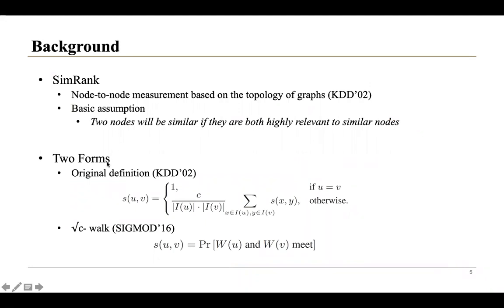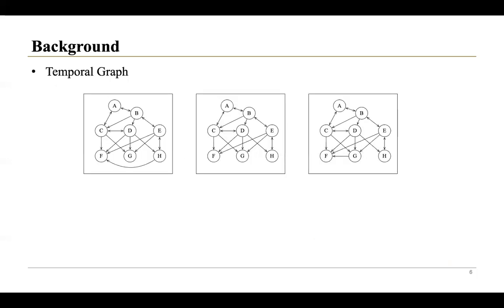SimRank also has some forms to compute the scores. Here we list two relevant forms. The first one is the origin definition, and the second one is the square root C-walk. It interprets SimRank between U and V as the probability that two walks W and W meet, where W is the square root C-walk starting from U. Existing research mainly focuses on SimRank computation over static and dynamic graphs and does not fully explore the nature of time in temporal graphs.